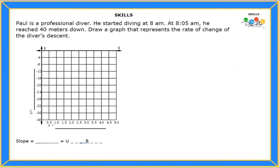Hello students, let's read the problem. It says Paul is a professional diver. He started diving at 8 a.m., and at 8:05 a.m. he reached 40 meters down. Draw a graph that represents the rate of change of the diver's descent.